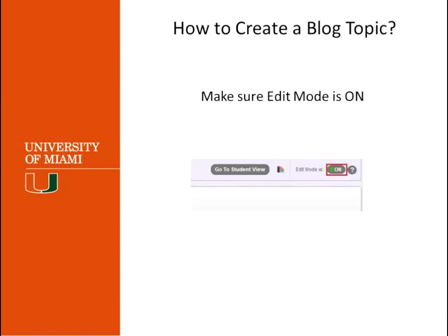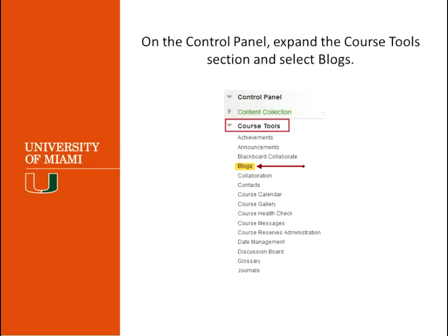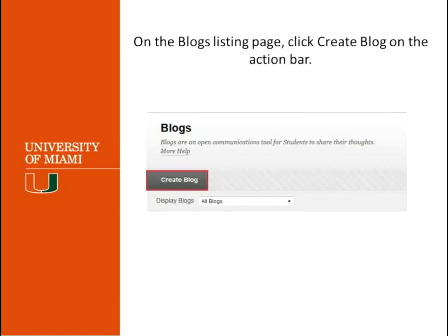So how do we create a blog topic? The first thing you have to do is make sure that your edit mode is on. It's an important thing but sometimes we forget that the edit mode is not on and we might not be able to start the creation of the blog or anything else in Blackboard. Then the next thing you would have to do is go to the course tools under the control panel and click Blogs. Then you will have the Create Blog page and just click on the button to create the new blog.